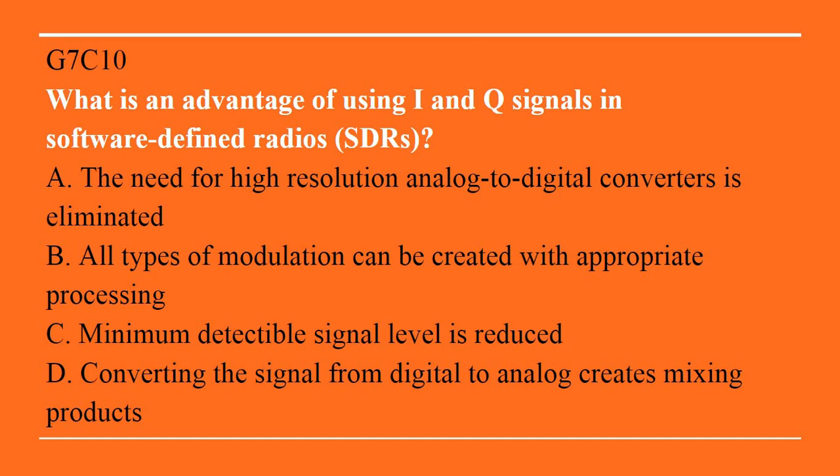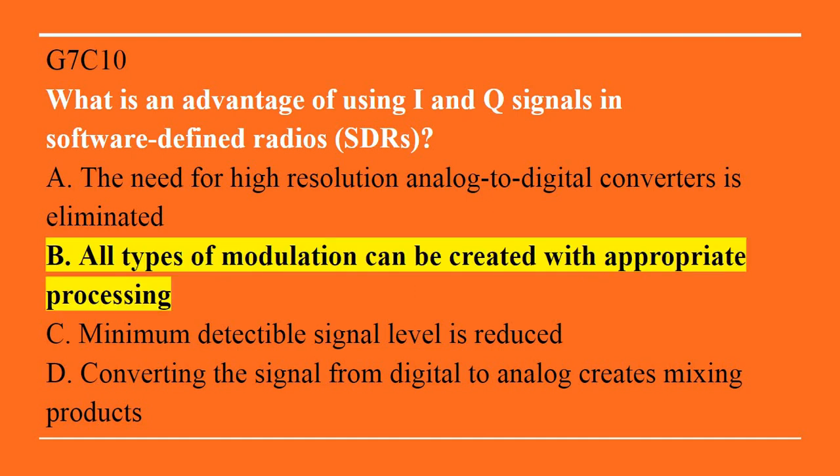G7C10: What is an advantage of using I and Q signals in software-defined radios? A. The need for high-resolution analog-to-digital converters is eliminated. B. All types of modulation can be created with appropriate processing. C. Minimum detectable signal level is reduced. D. Converting the signal from digital to analog creates mixing products. Answer is B. All types of modulation can be created with appropriate processing.